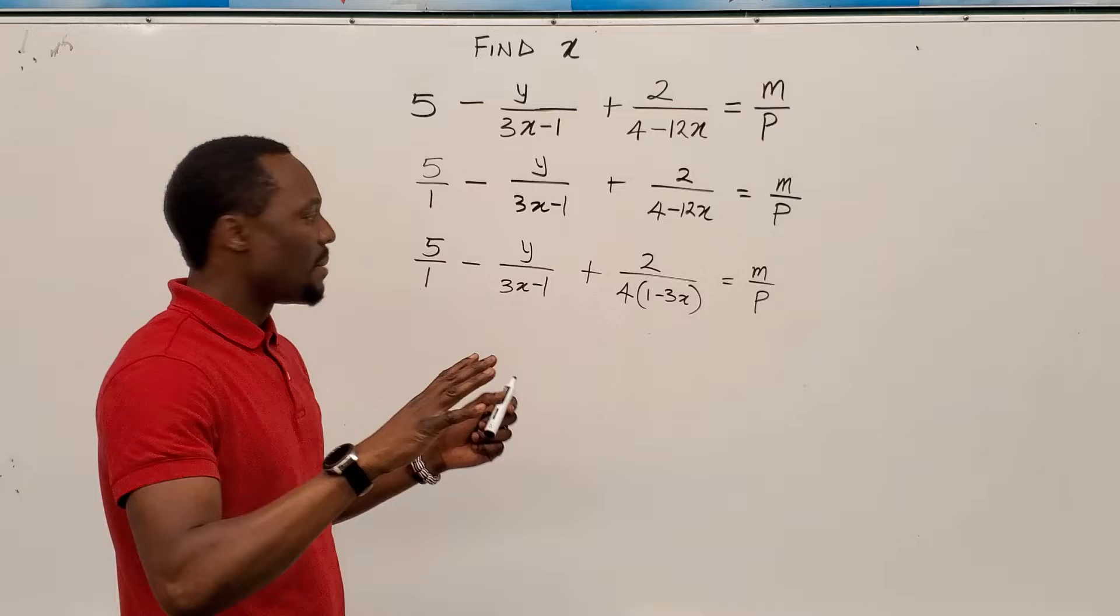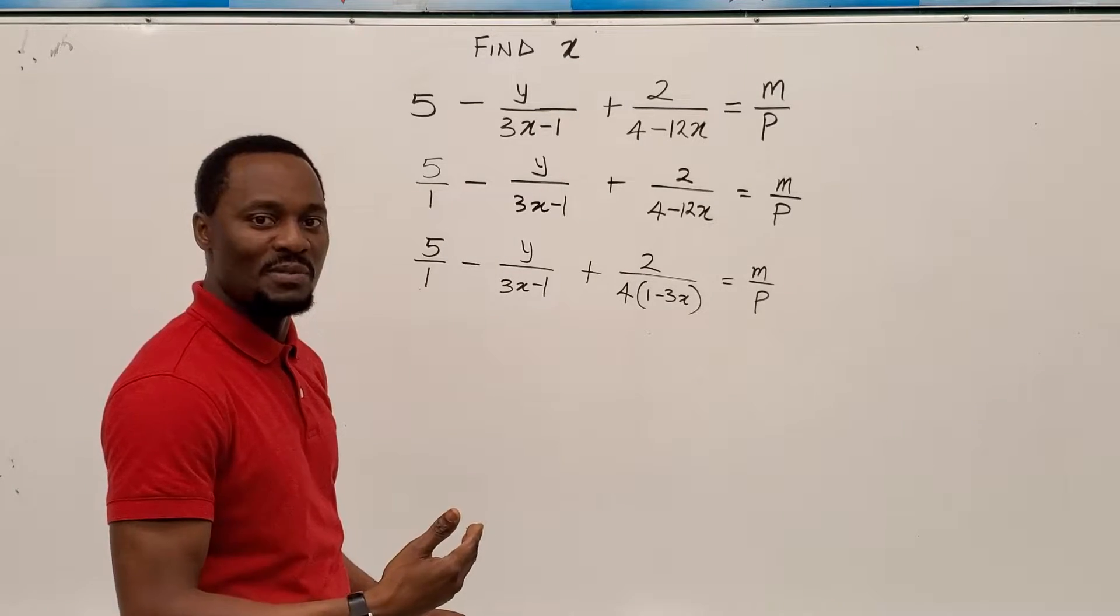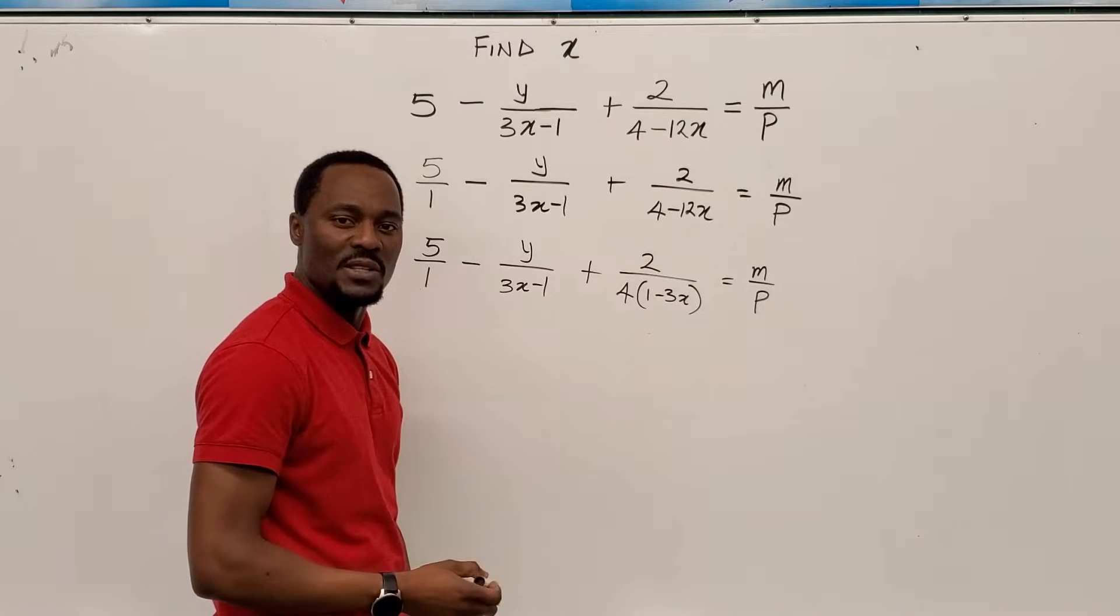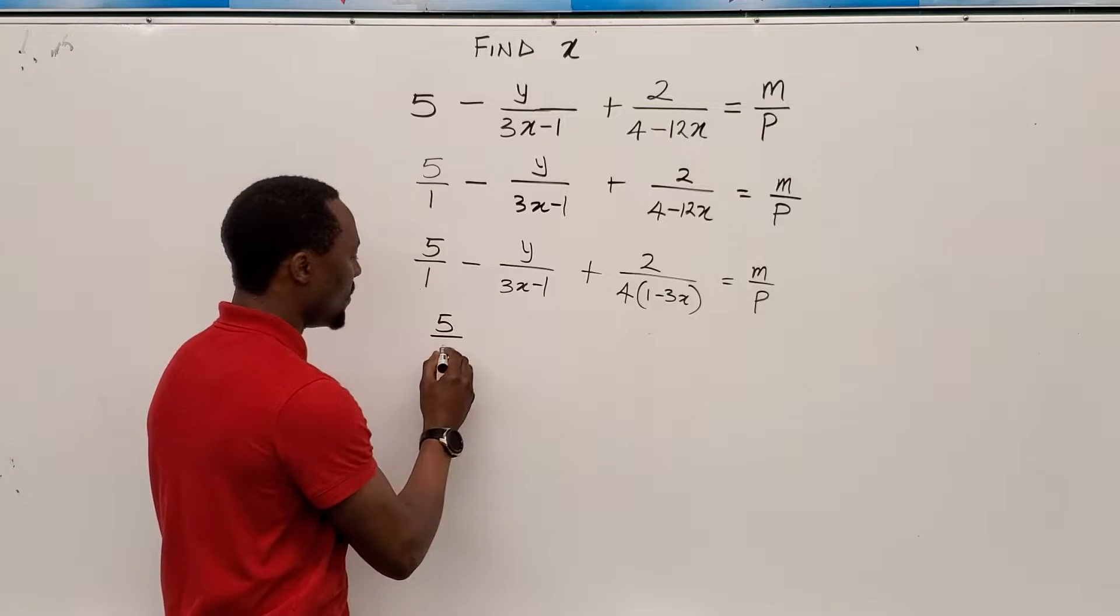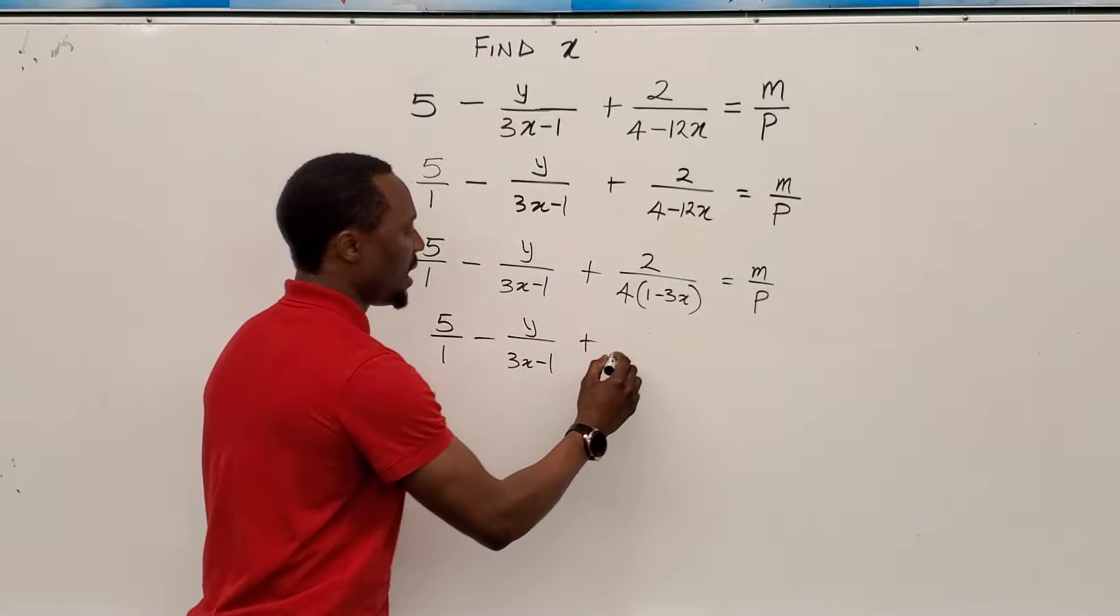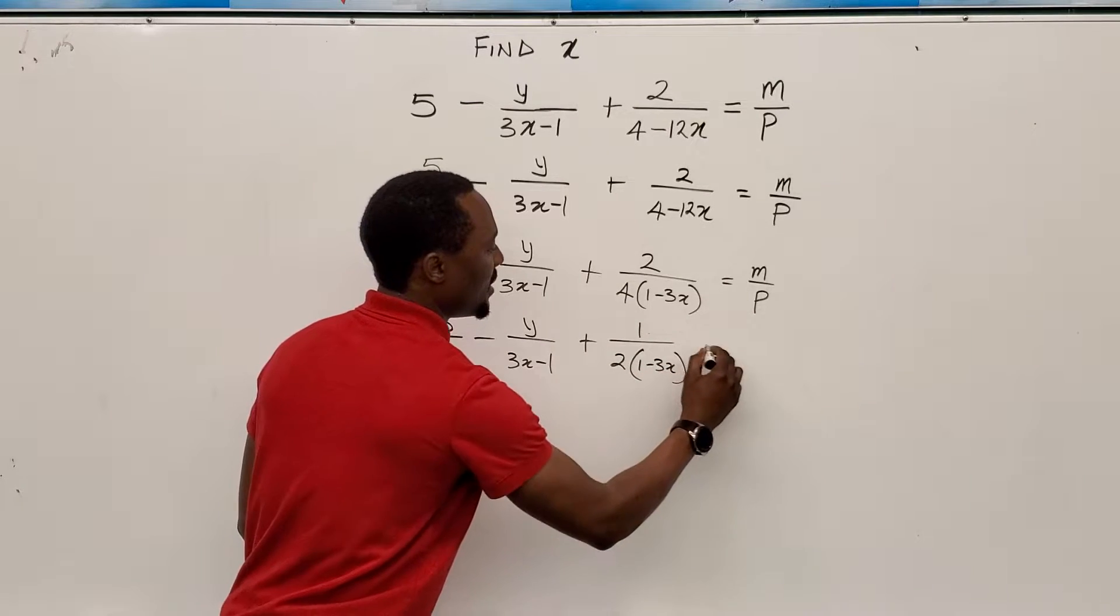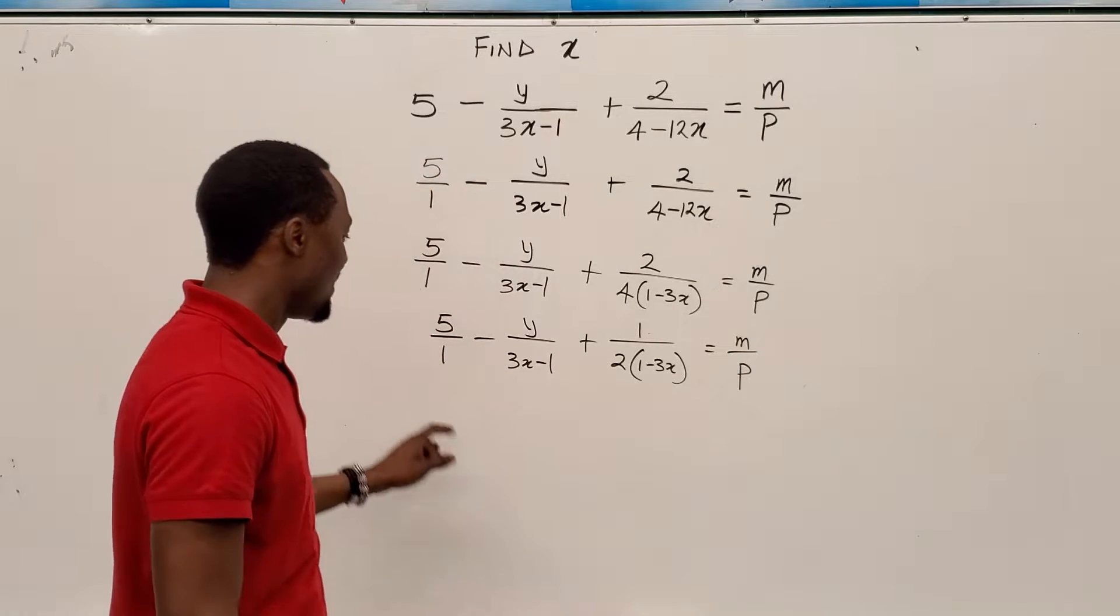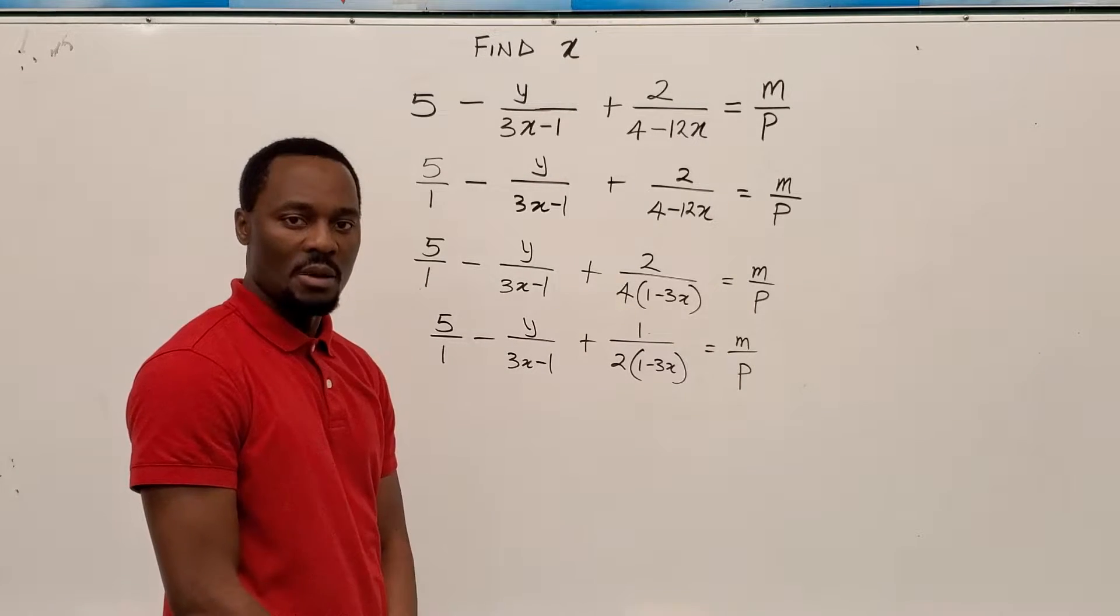So at this point, my equation looks simpler, not as complex as what it was before, because now I know that this 2 can divide this 4 and leave me with 2. So I can go and say 5 over 1 minus y over 3x minus 1 plus 1 over 2 into 1 minus 3x equals m over p. Now that there is nothing to simplify, let's talk about the least common multiple.